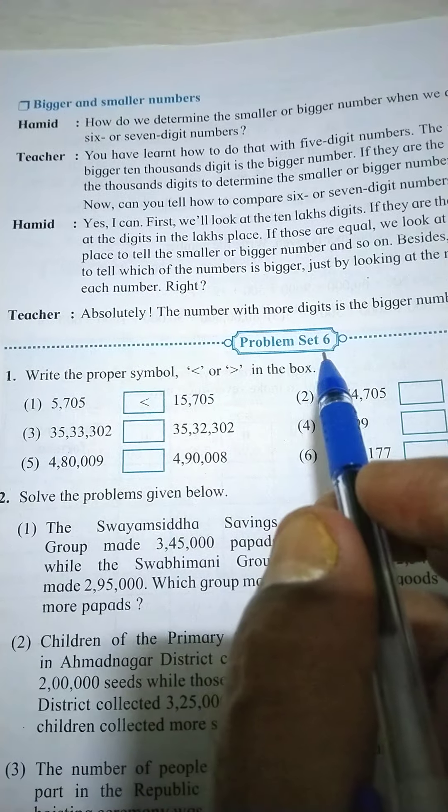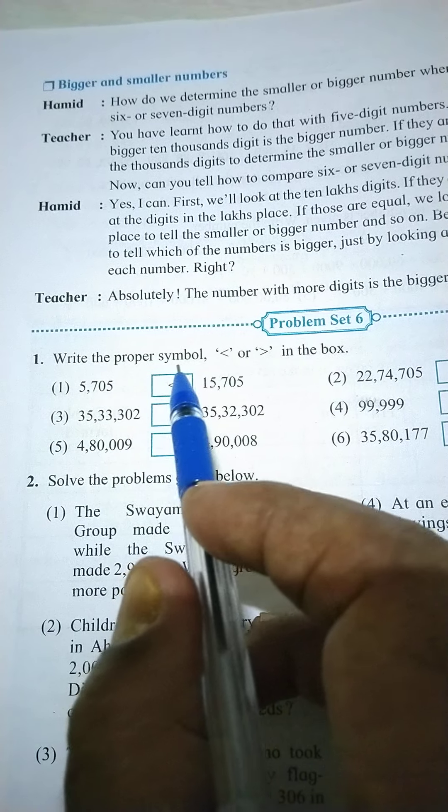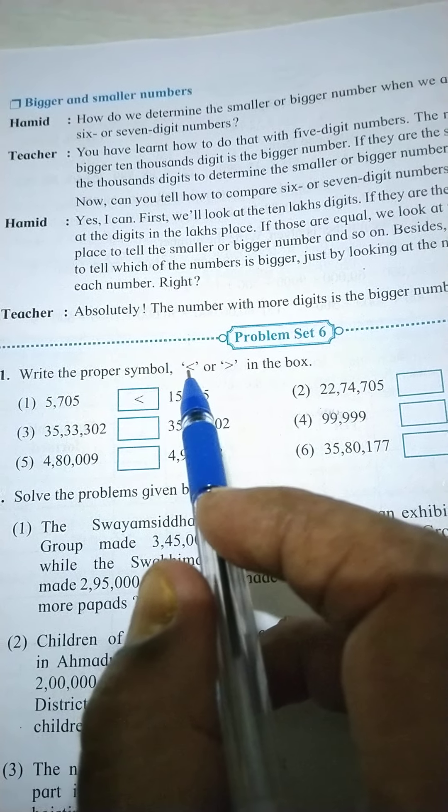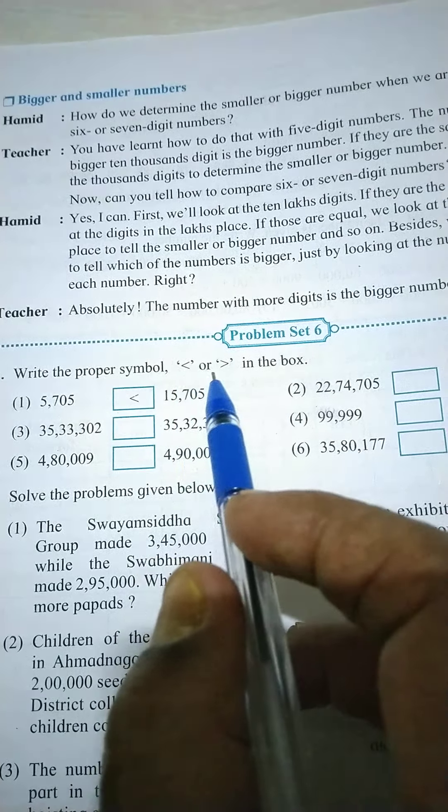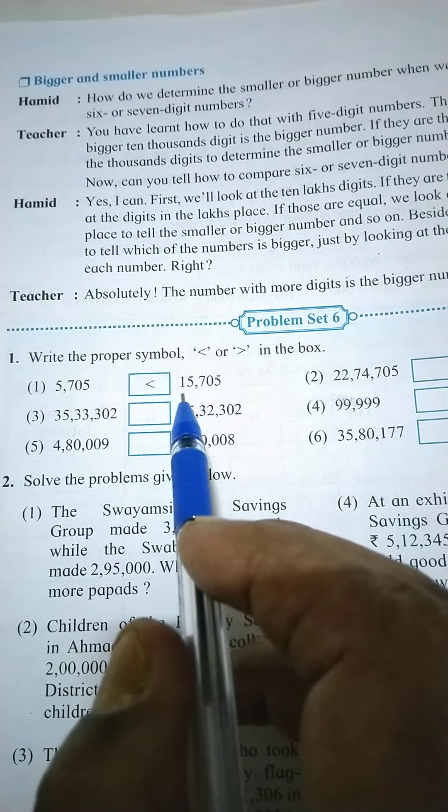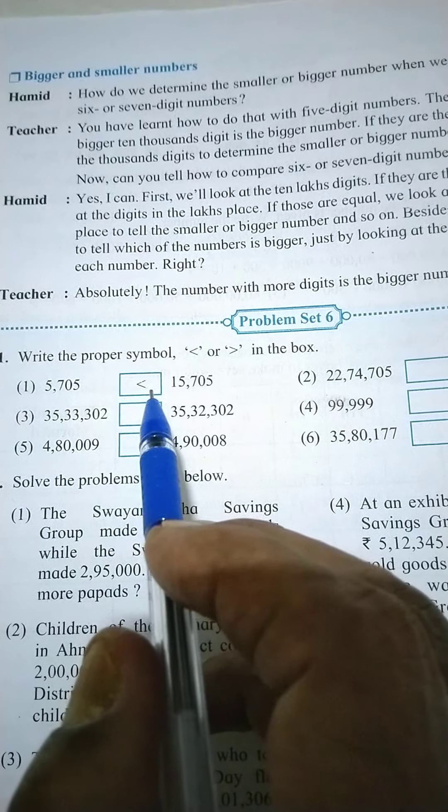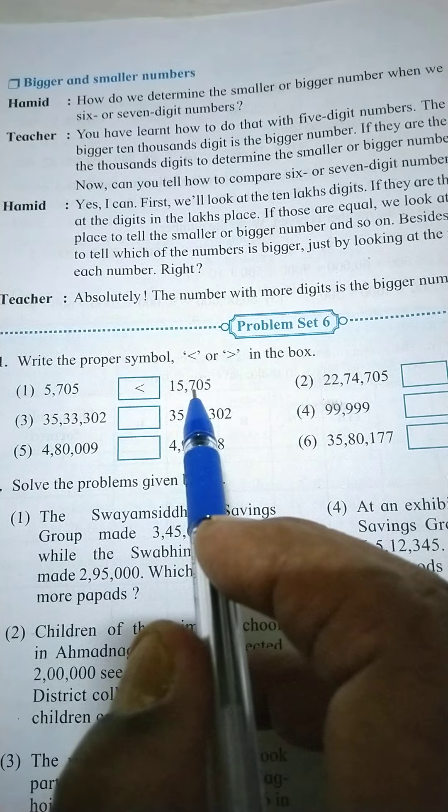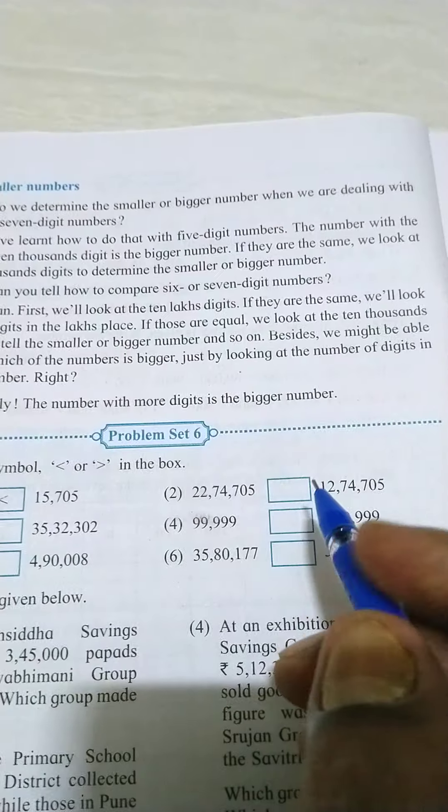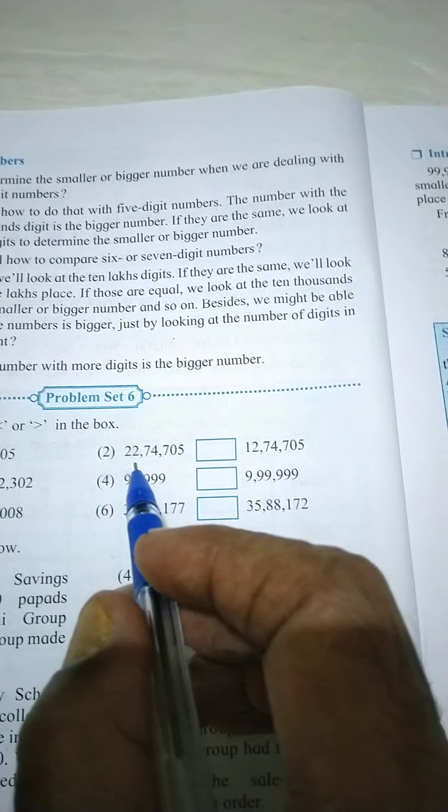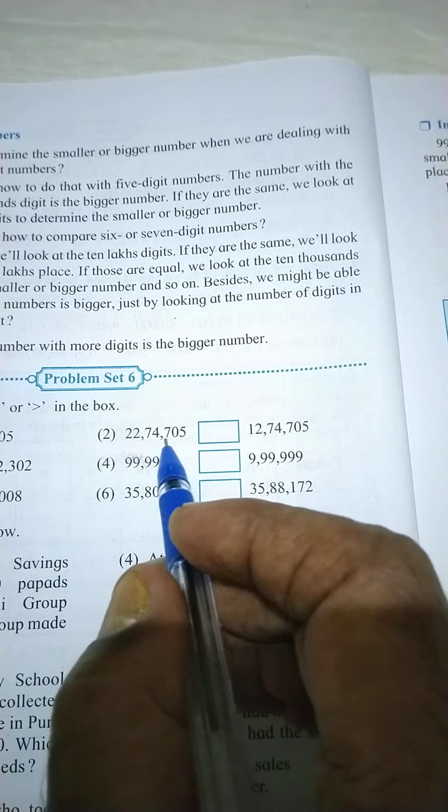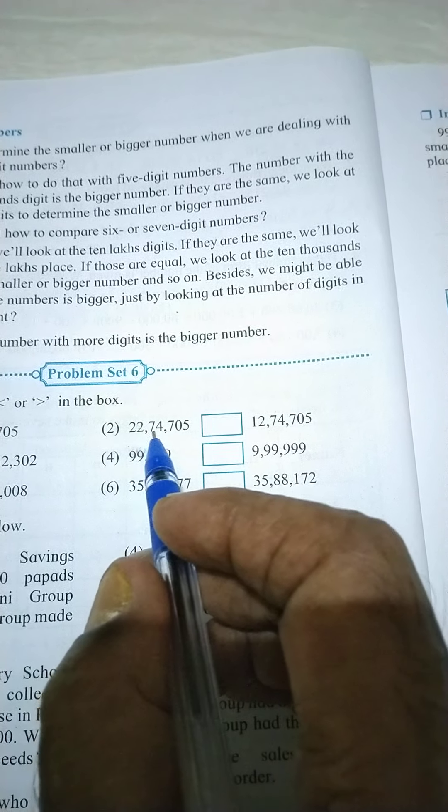Teacher: You have learned how to do this with five-digit numbers. The number with the bigger ten thousand digit is the bigger number. If they are the same, we look at the thousands digit to determine the smaller or bigger number.